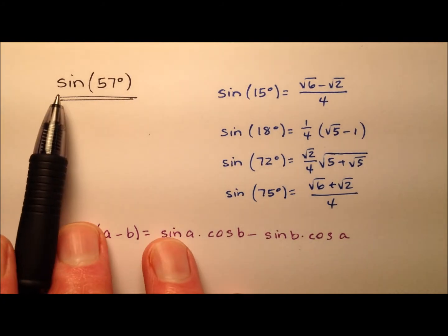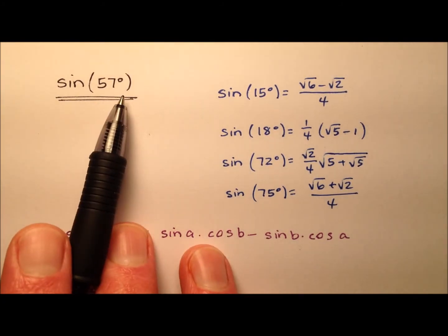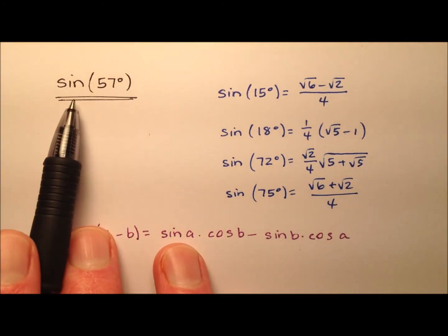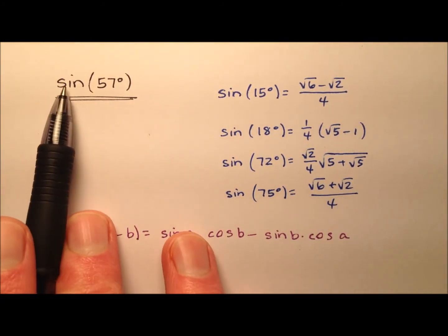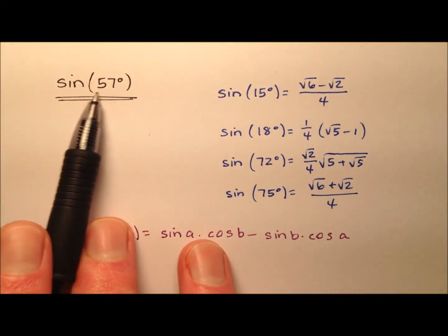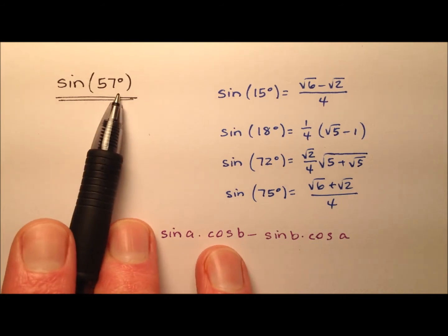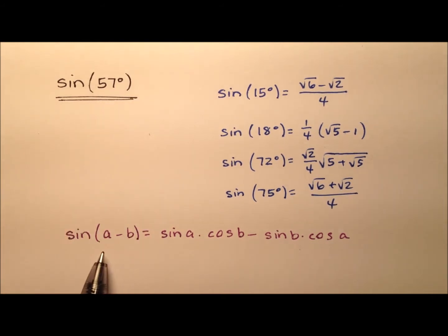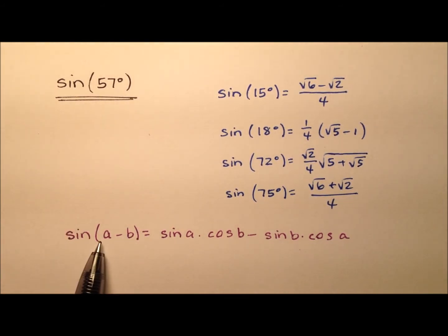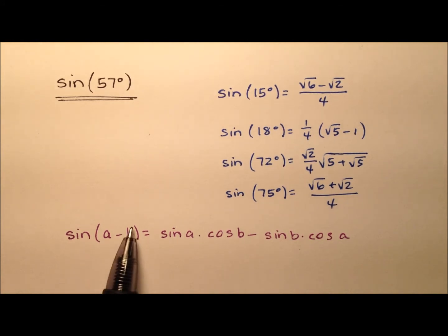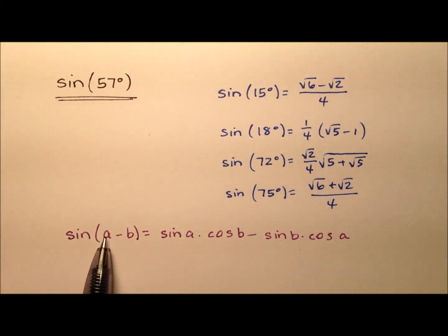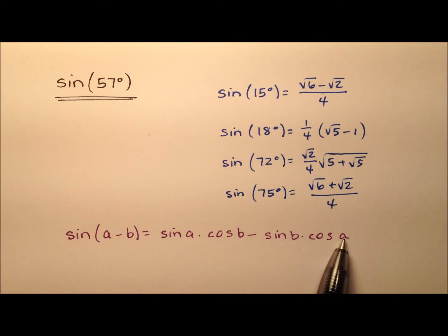In this video, I'm going to work through the process of finding the exact value for the sine of 57 degrees, and I'm going to do so using the difference identity for sine, which says the sine of two angles, a minus b, has this expansion.